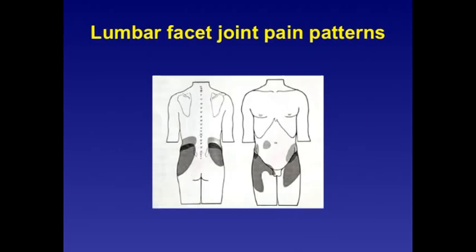In the lumbar facetogenic patterns, typically the pain is referred into the pelvic crest, the gluteal area, and into the flanks. Sometimes it can cross the midline and refer to the anterior parts of the thighs and groin, and even the periumbilical area.